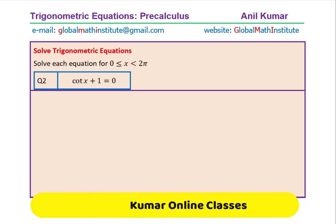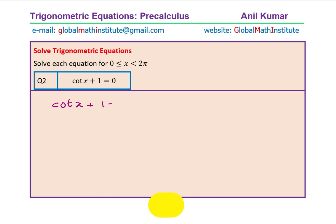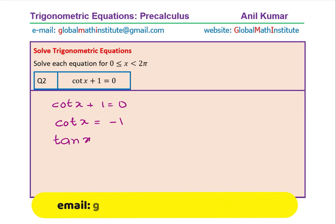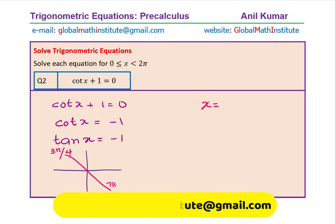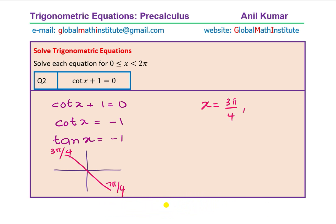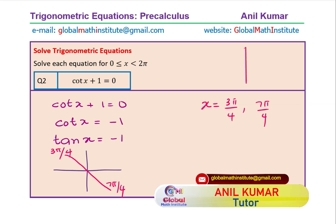Question number 2 is cotangent x plus 1 equals 0. Taking 1 to the other side, cotangent x equals minus 1. Cotangent is the reciprocal of tan, so tan x equals minus 1. A negative value for tan means two solutions in quadrant 2 and quadrant 4. The angle is pi by 4, so the solutions are x equals 3 pi by 4 and 7 pi by 4. You can verify using the special triangle pi by 4, pi by 4, pi by 2, or the unit circle.